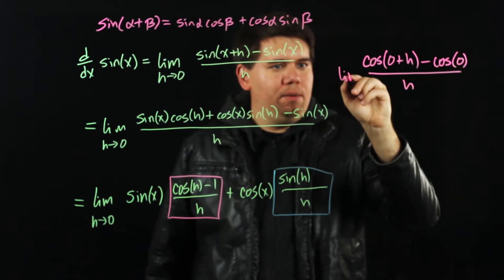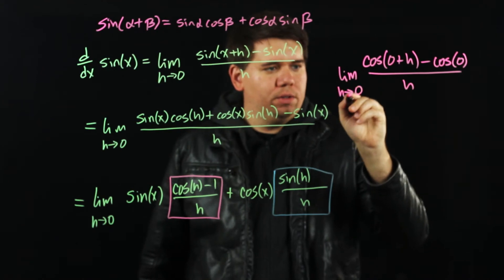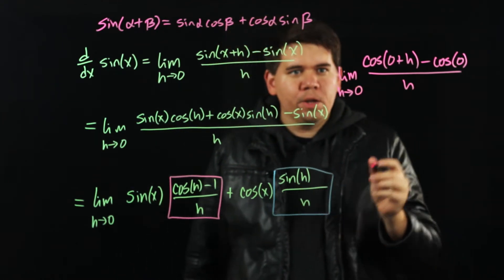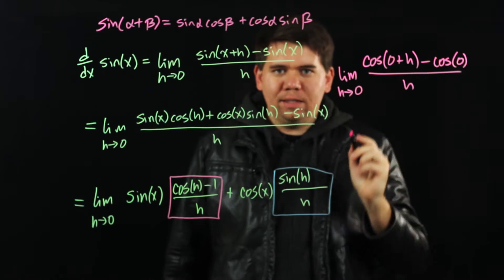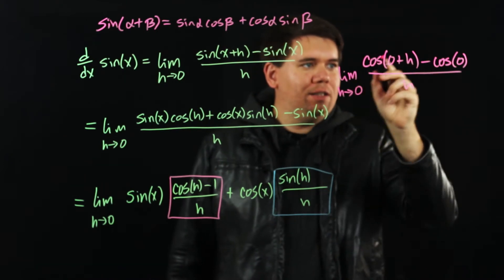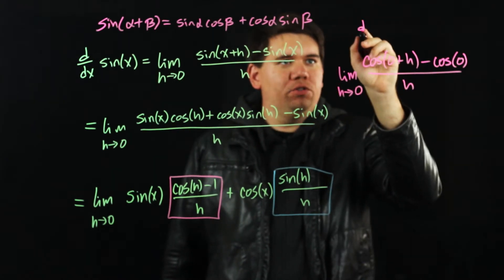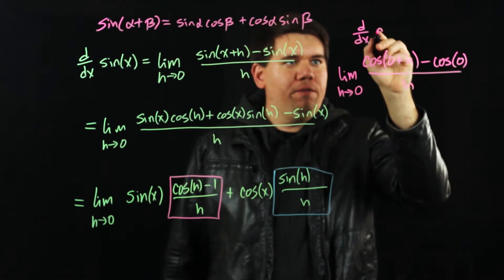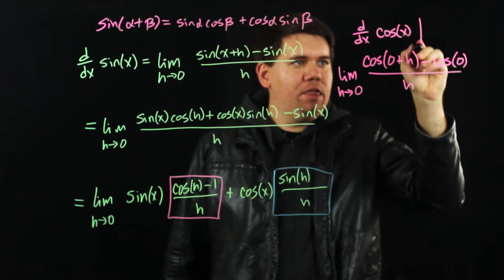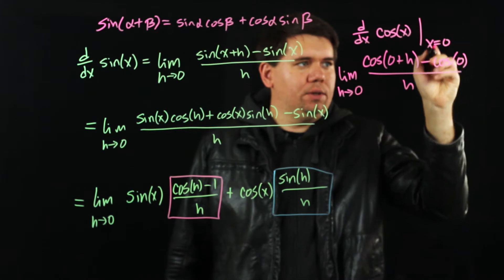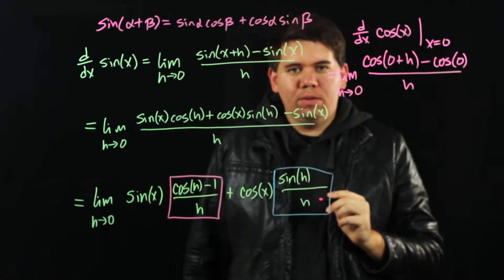And we're looking at the limit as h goes to 0. But what is this limit as h goes to 0? This is just the definition of the derivative of your cosine of x at the point x equals 0.